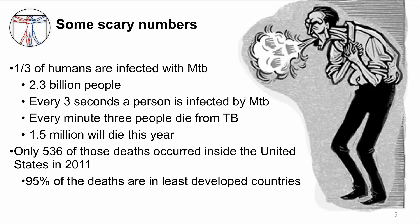MTB has adapted to become a very successful human pathogen. Here are some frightening numbers: one third of all humans are infected with MTB, equaling 2.3 billion people. Every three seconds, a person is infected with MTB. Every minute, three people die from TB. The result is that 1.5 million people will die of TB this year, and almost all of these deaths occur in the most impoverished and economically vulnerable countries. In contrast, only 536 deaths due to TB occurred in the U.S. in 2011.